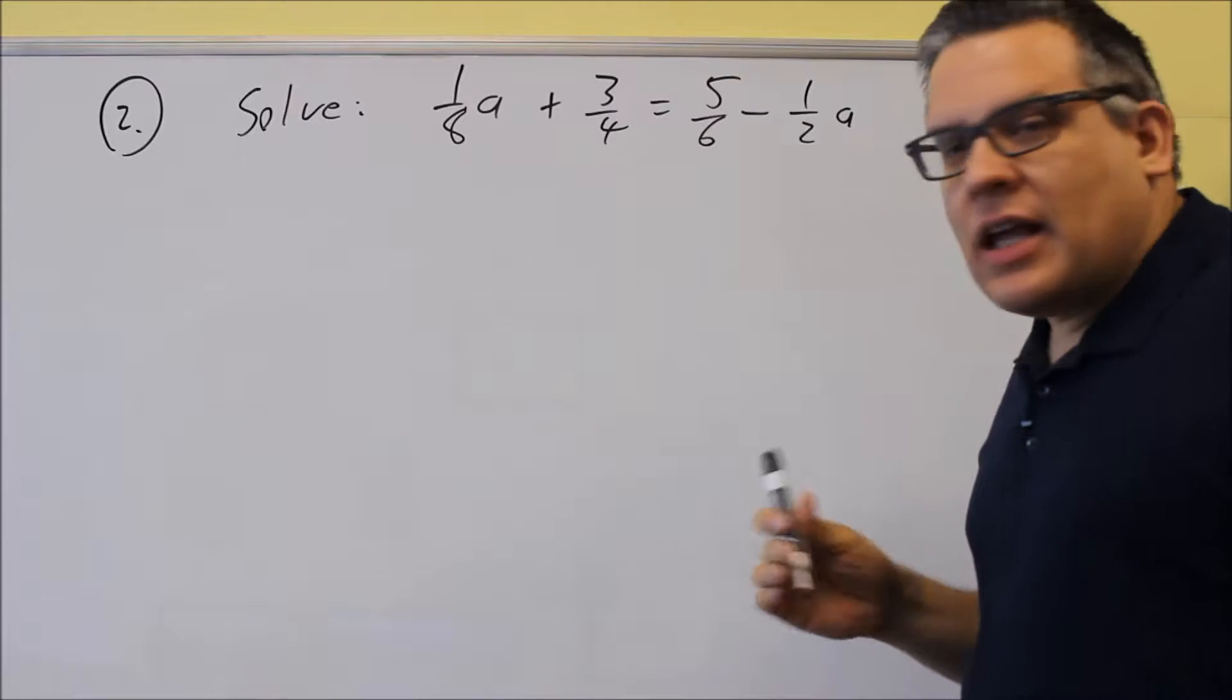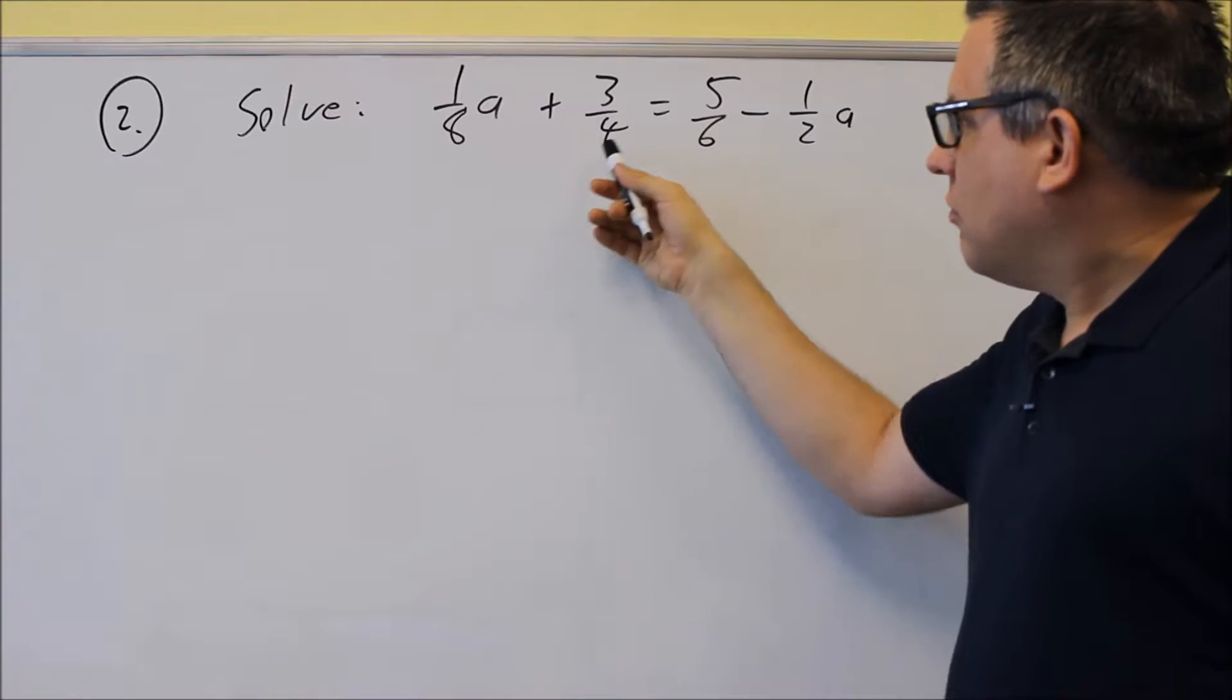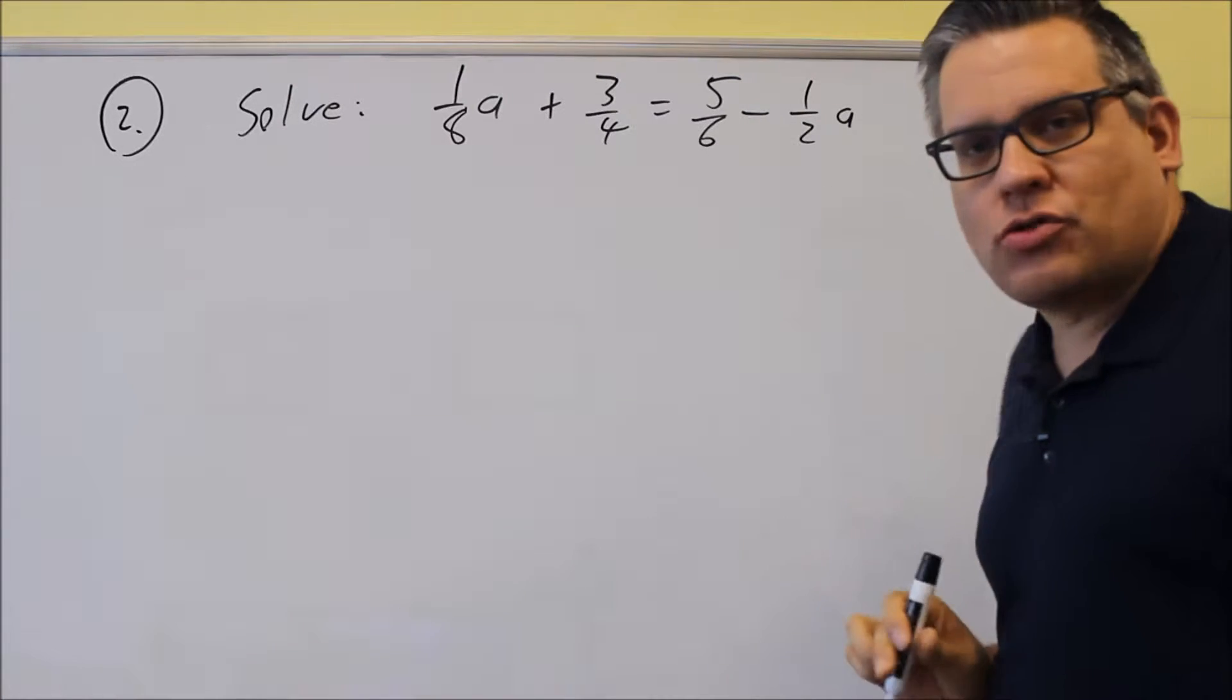Then I would do eight times three. So then I would have twenty-four. Eight goes into twenty-four, four goes into twenty-four, six goes into twenty-four, and two goes into twenty-four.